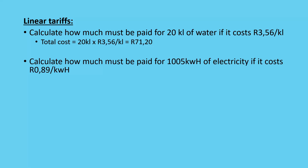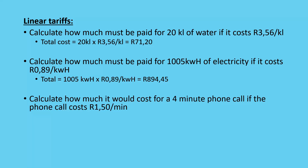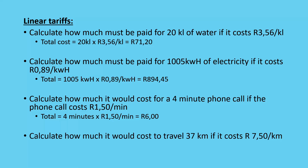For electricity, to calculate how much must be paid for 1005 kilowatt hours at 89 cents per kilowatt hour, simply multiply the two together to get your cost. For a telephone call, how much would a four-minute call cost at R1.50 per minute? Multiply four minutes by R1.50 to get a total of R6.00. To calculate the cost of travelling 37 kilometres at R7.50 per kilometre, multiply them together to get a total of R277.50.